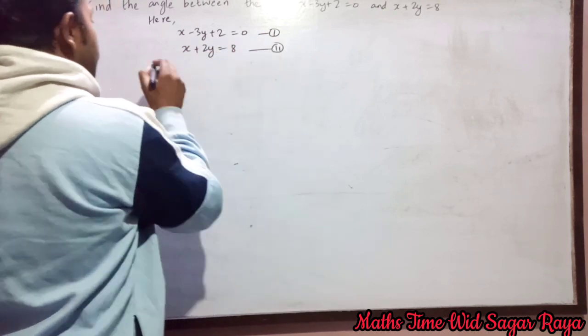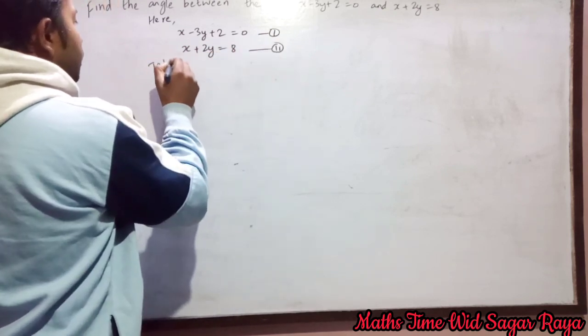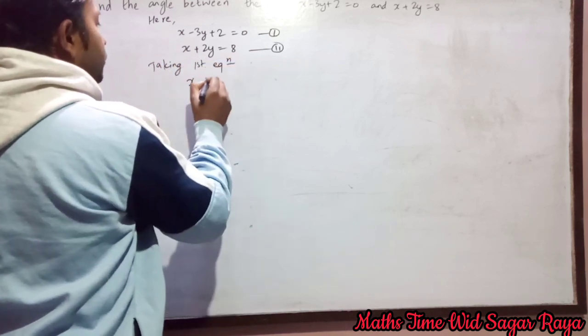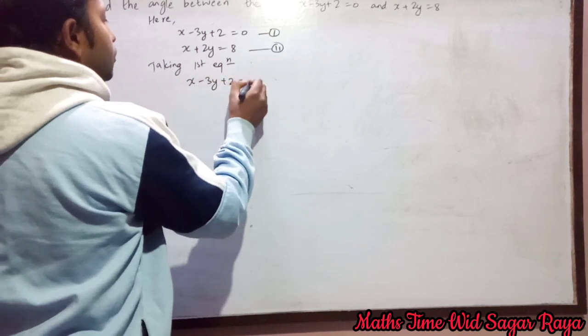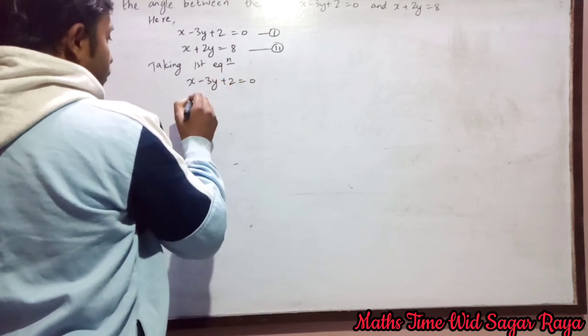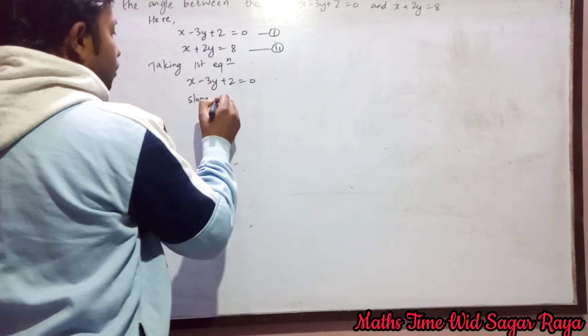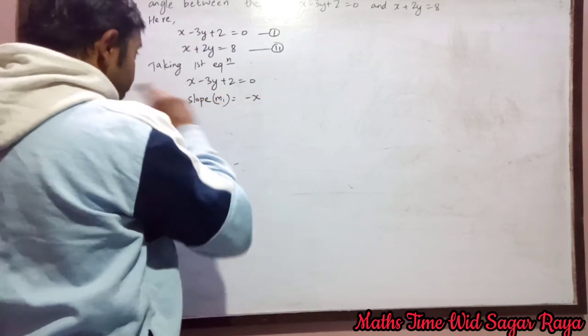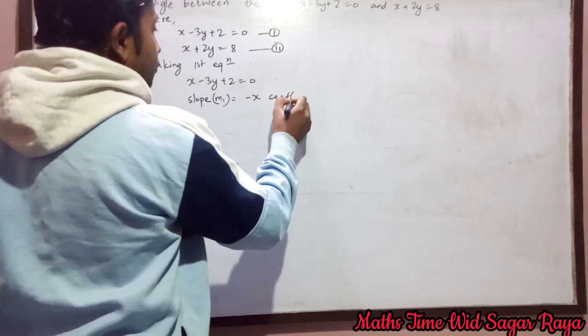Let's take first equation x minus 3y plus 2 equal to 0. You can find your slope, let it be m1. Slope formula is minus x coefficient by y coefficient.